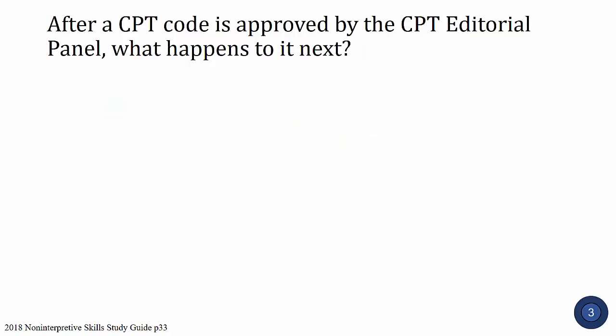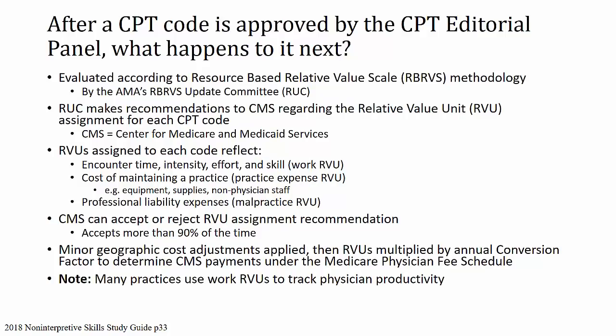Next question: after a CPT code is approved by the CPT Editorial Panel, what happens to it next? The code is evaluated according to the Resource-Based Relative Value Scale, or RBRVS, methodology by the AMA's RBRVS Update Committee, or the RUC Committee, which is a very powerful committee. The RUC makes recommendations to CMS — the Center for Medicare and Medicaid Services — regarding the Relative Value Unit, or RVU, assigned for each CPT code.